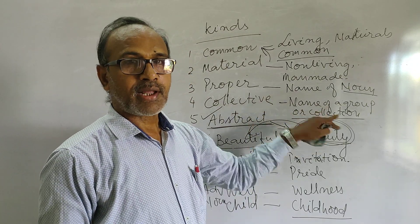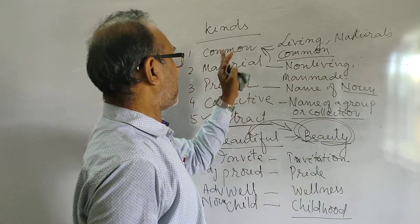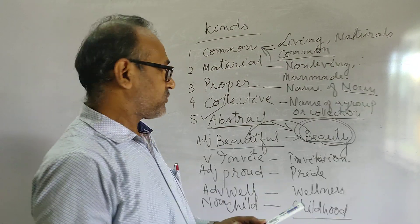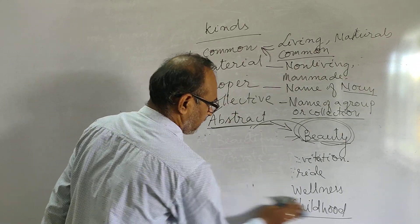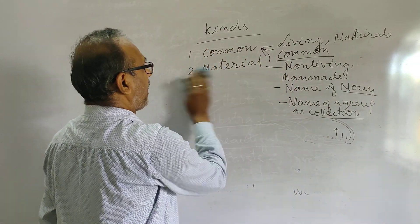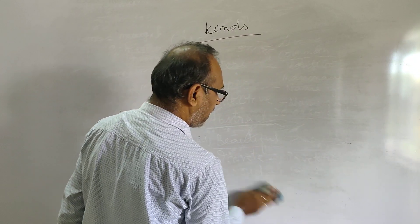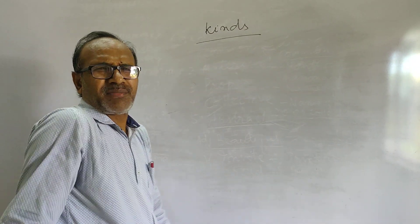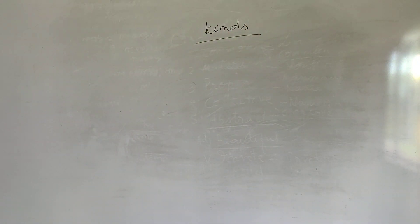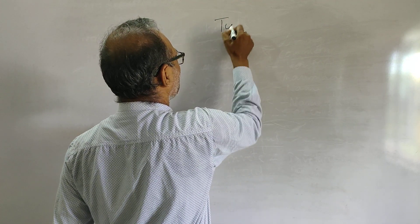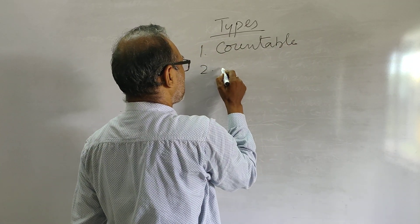Whatever may be, this is the concept of how an abstract noun can be formed from an original word. Hope you understand these five types of noun. Let us move to the types of noun. Under types of noun, we have only two: countable and uncountable. If I ask you what is countable, your answer will be that which can be counted — how easy it is.